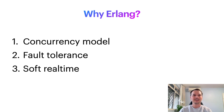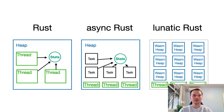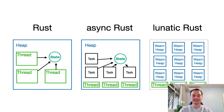So why Erlang? I would say there are three main properties that make Erlang great: the concurrency model, the approach to fault tolerance, and soft real-time. Let's first look at the concurrency model. In Rust we have two concurrency models: threads and async tasks.